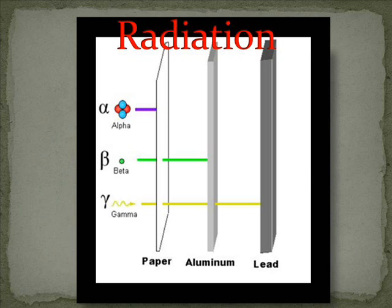The different types of radiation are alpha radiation, beta radiation, gamma radiation, and neutron radiation.